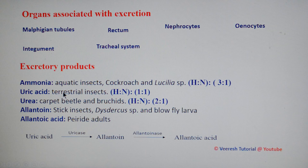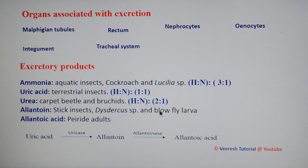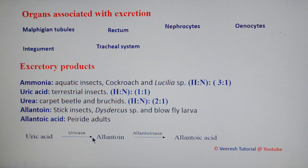In carpet beetles and Blattodea, the nitrogenous excretory end product is urea. In stick insects, Dysdercus, and blowfly larvae, the nitrogenous end product is allantoin. In piereid butterflies, the end product is allantoic acid. Urea is converted to allantoin with the help of uricase enzyme, and allantoin is further converted to allantoic acid with the help of allantoinase enzyme.